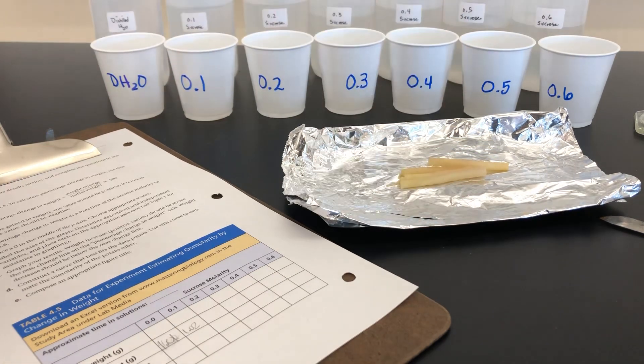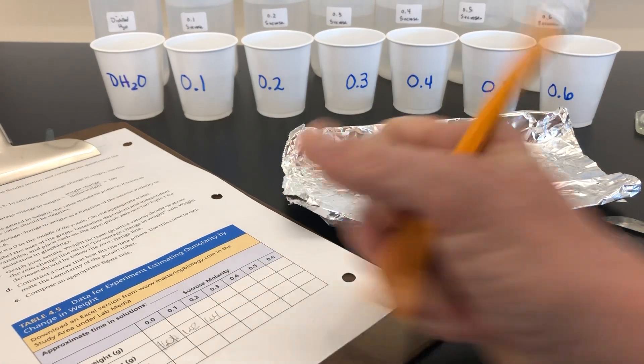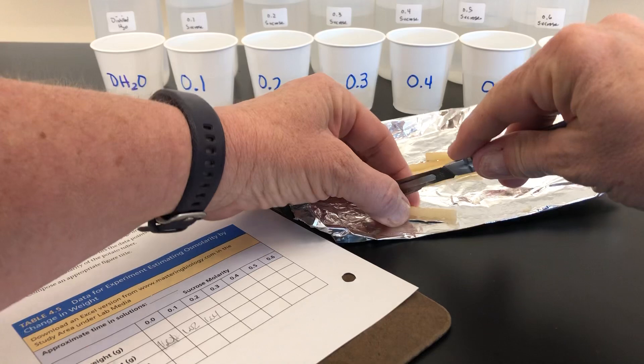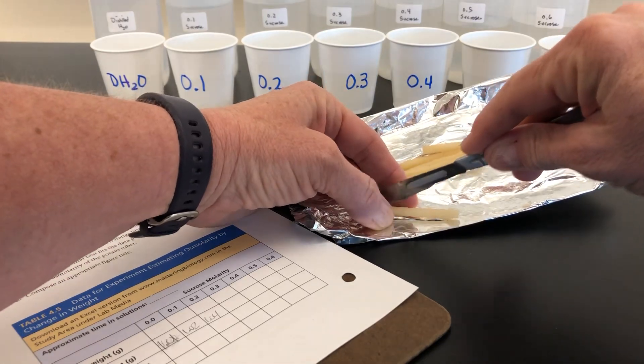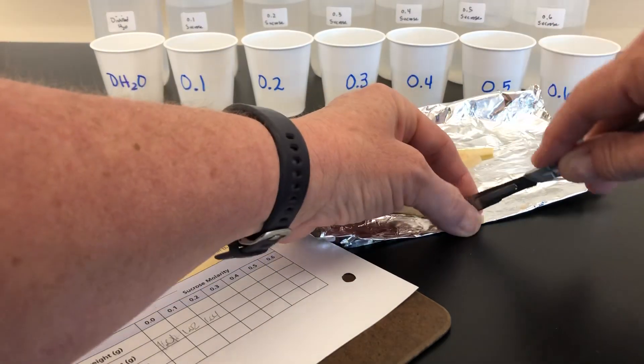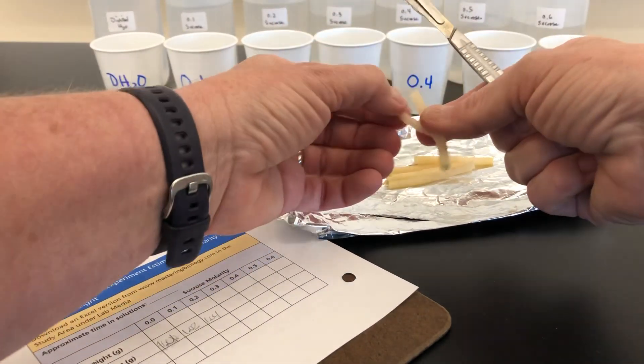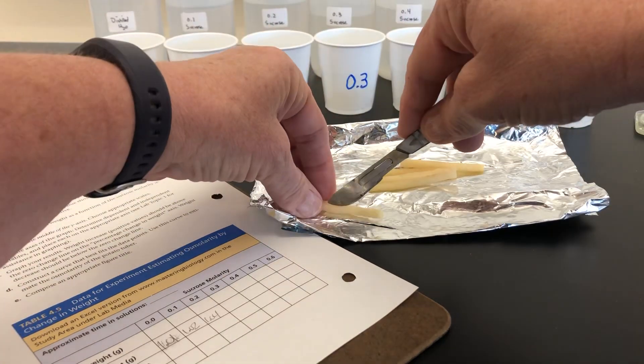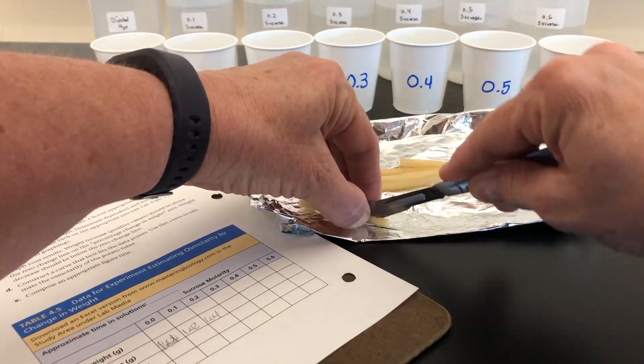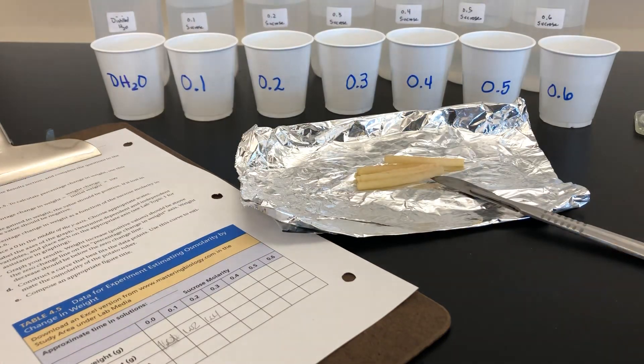Our second cylinder weighs 1.04. We'll place it in 0.2.